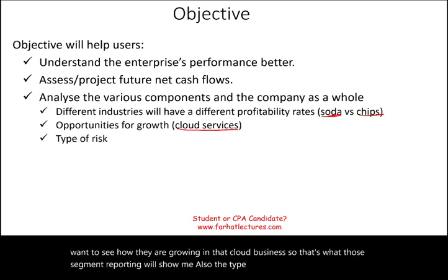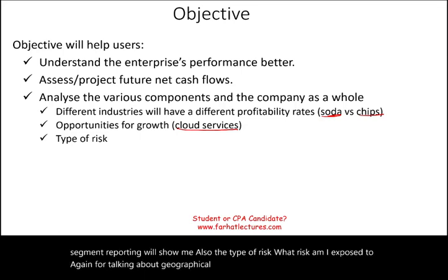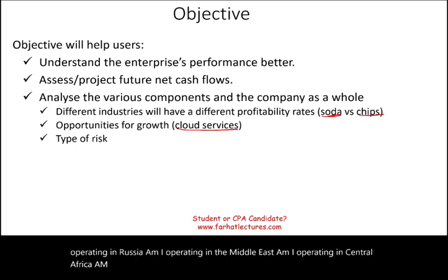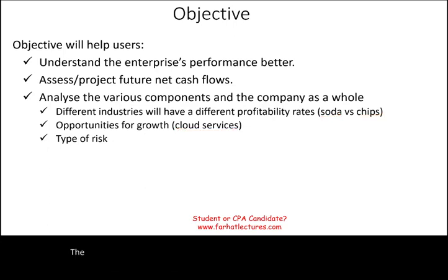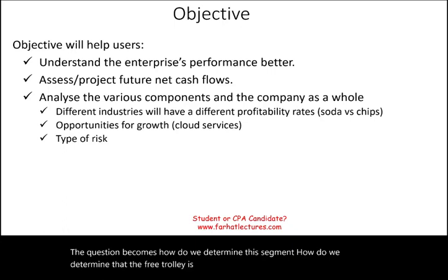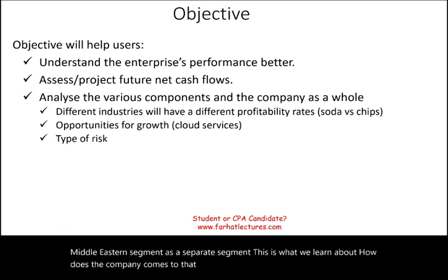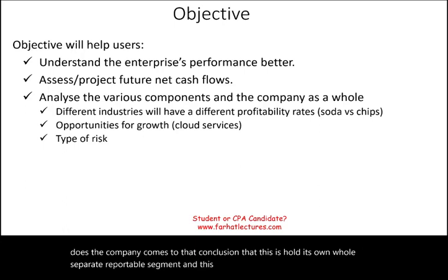Segment reporting also reveals what type of risk you're exposed to — geographical segmentation tells you whether a company is operating in Russia, the Middle East, Central Africa, or Latin America, because each region carries different risks. The question becomes: how do we determine a segment? How do we determine that Frito-Lay is a separate segment, or that the Middle Eastern segment is a separate segment? This is exactly what we need to learn.